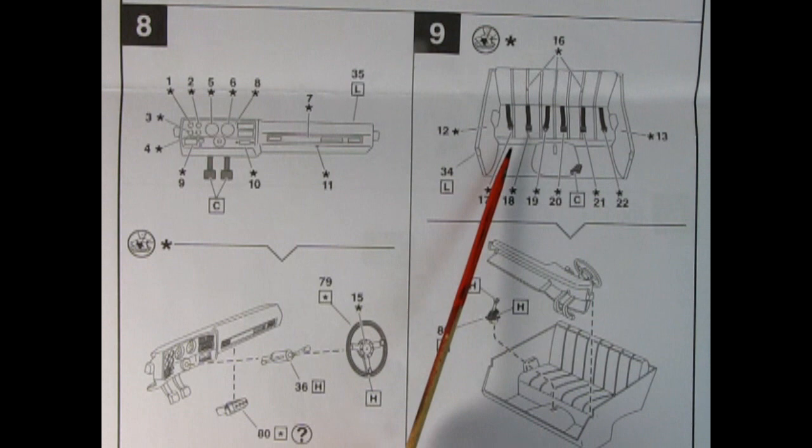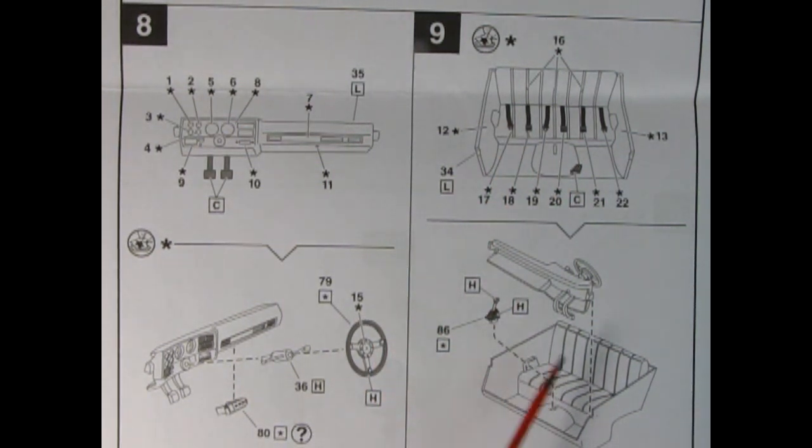Again, there is that interior tub with the seatbelts, and here is the dashboard and our shift lever being dropped into place.